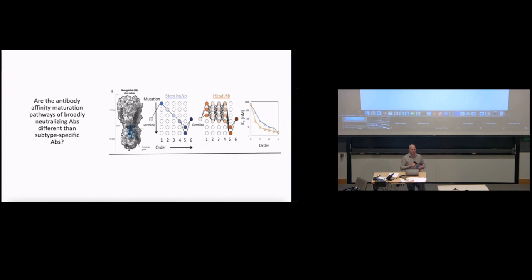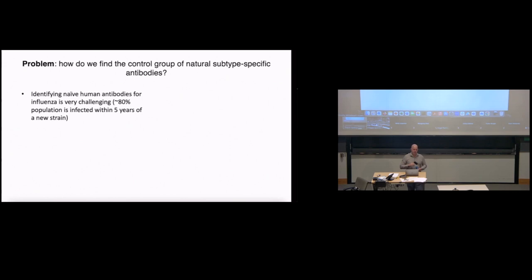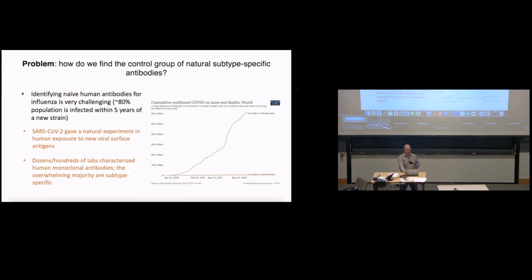We wanted to ask whether the affinity maturation pathways alone of broadly neutralizing antibodies or BNABs are different than these run-of-the-mill antibodies. The idea is if you have a BNAB where only one mutation improves affinity of all the possible mutations you can make, and then a second one, and then a third one, it's very rare that you would find the right pathway through the forest to get to those good developed BNABs. By contrast, if you have a run-of-the-mill antibody, many different mutations can increase affinity at once. So we wanted to test this hypothesis. We wrote an R01, we got it funded. But how do we actually find these run-of-the-mill antibodies? How do we find the right control group?